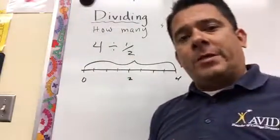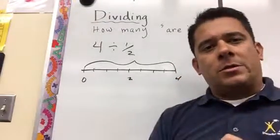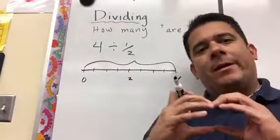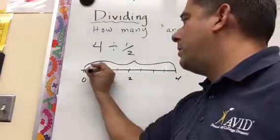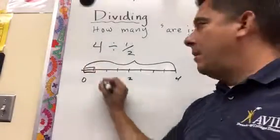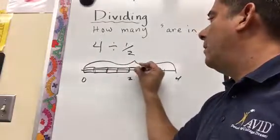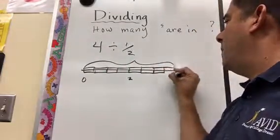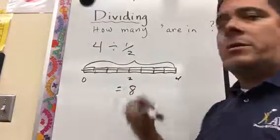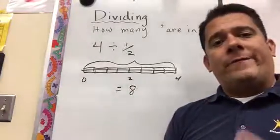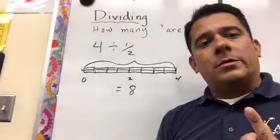Now, when we're showing the fractions, what I like to do is I like to put rectangles around them to show here's an entire half. So here is a half. Here's another half. Here's 3 and 4 and 5 and 6 and 7 and 8. So the answer, 4 divided by 1 half, or how many halves are in 4, the answer is 8.